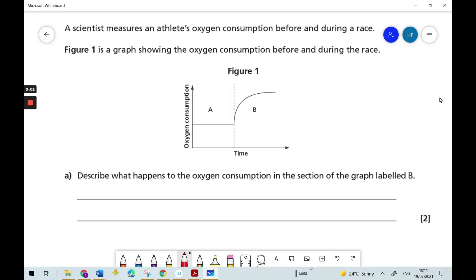Let's have a go at this exam style question. The question says, a scientist measures an athlete's oxygen consumption before and during a race. Figure 1 is a graph showing the oxygen consumption before and during the race, and then we have an image of a graph.